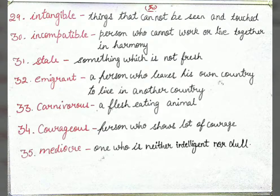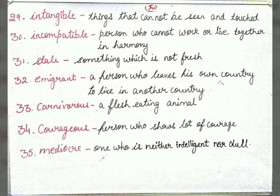Next is 'intangible' — things that cannot be seen or touched. For example, someone's feelings are intangible — you can neither see them nor touch them. Next is 'incompatible' — a person who cannot work or live together in harmony with others.